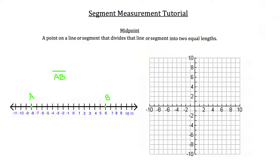Since AB is 14 units, 7 units would be exactly halfway between A and B. You can count 7 units in from either A or B. Counting from B, starting at 6, going 1, 2, 3, 4, 5, 6, 7 units brings you to negative 1, which is the midpoint between points A and B. This point, labeled point C, is the midpoint of segment AB.